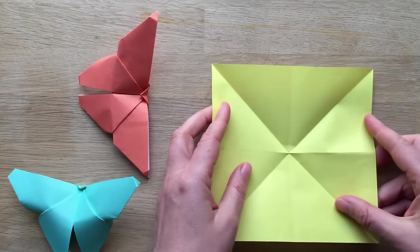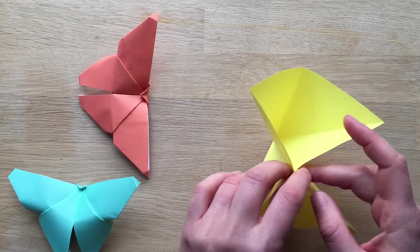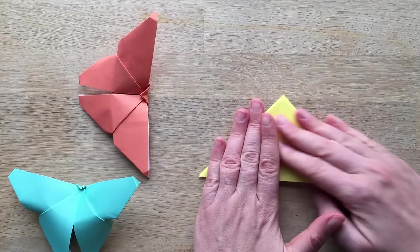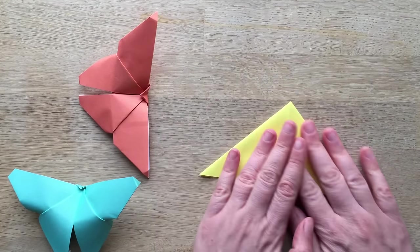I'll show you again, so you bring these two points, you bring them together and then you gently fold it down. Now if this was white on one side and yellow on the other, you'd want the white on the inside right now.